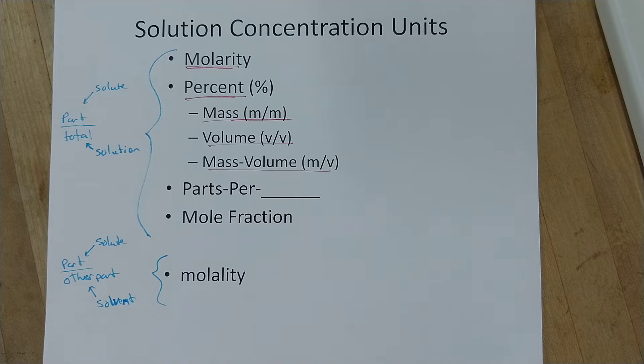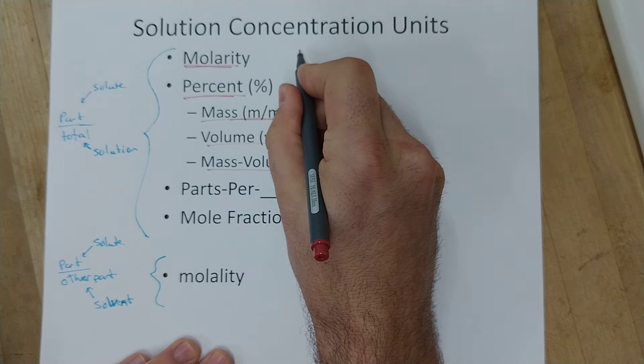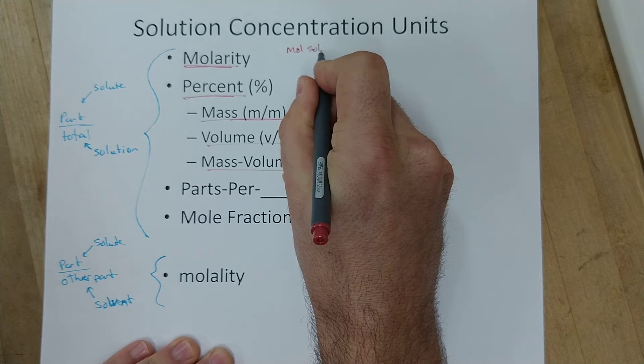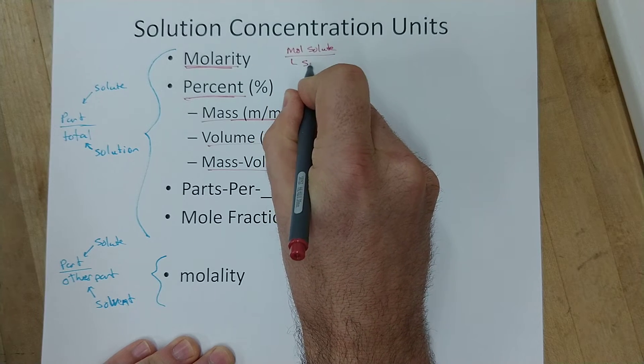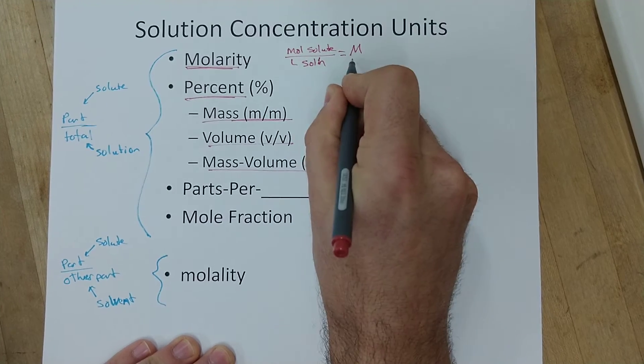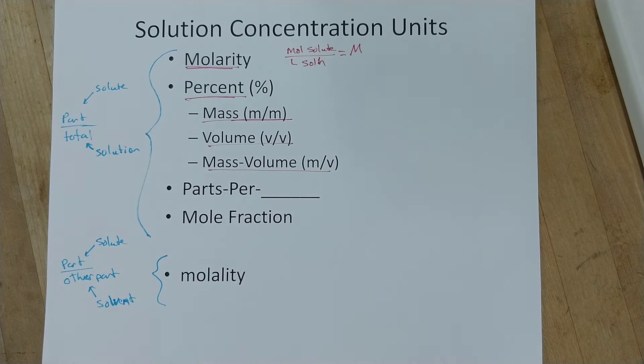So let's go through each one and talk about how we calculate them. We'll remind ourselves that molarity is the moles of the part, the solute, over the liters of the total solution. And we use big capital M for that.